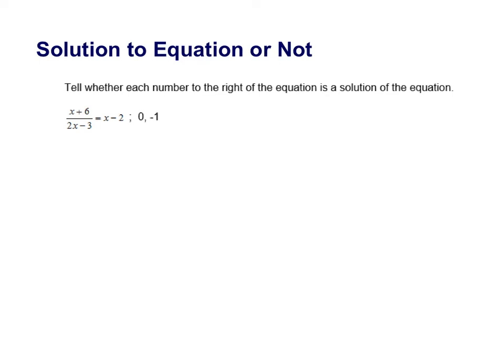All right, for this example we just want to know if the numbers to the right, so if 0 and negative 1 right here, are solutions to this equation. So we're going to just plug in one number at a time and see if the left side equals the right side.